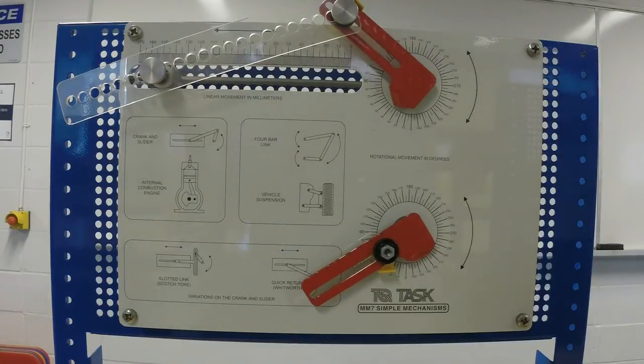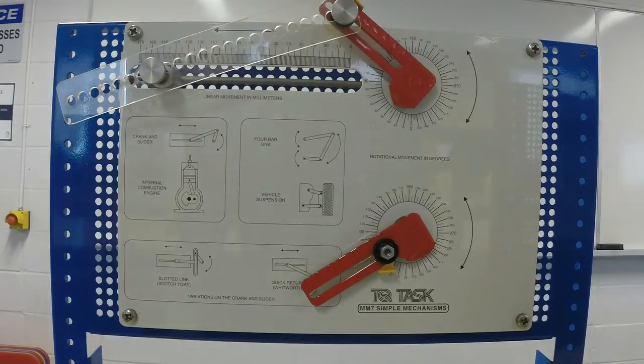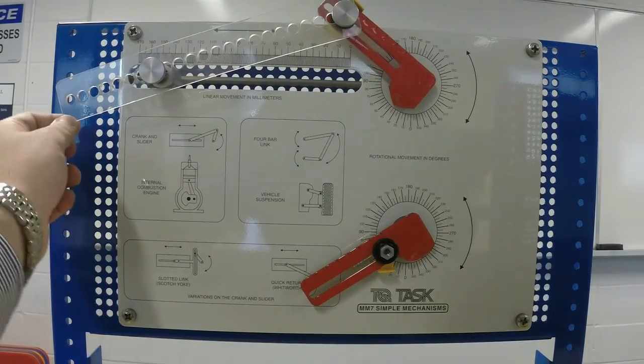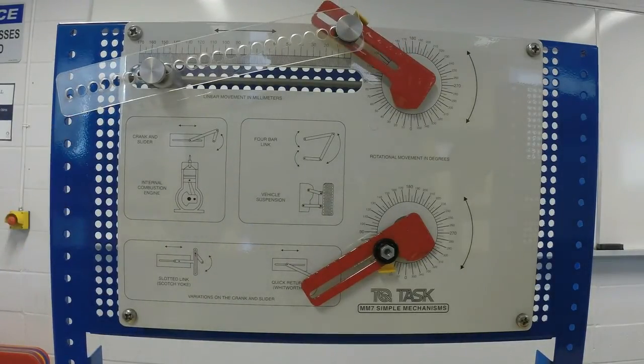Attached at the end of the crank by the pivot is a rod, usually called a connecting rod or coupler. So this transparent thing is called coupler. The end of the rod attached to the crank moves in a circular motion, while the other end is usually constrained to move in a linear motion. This part is called slider.